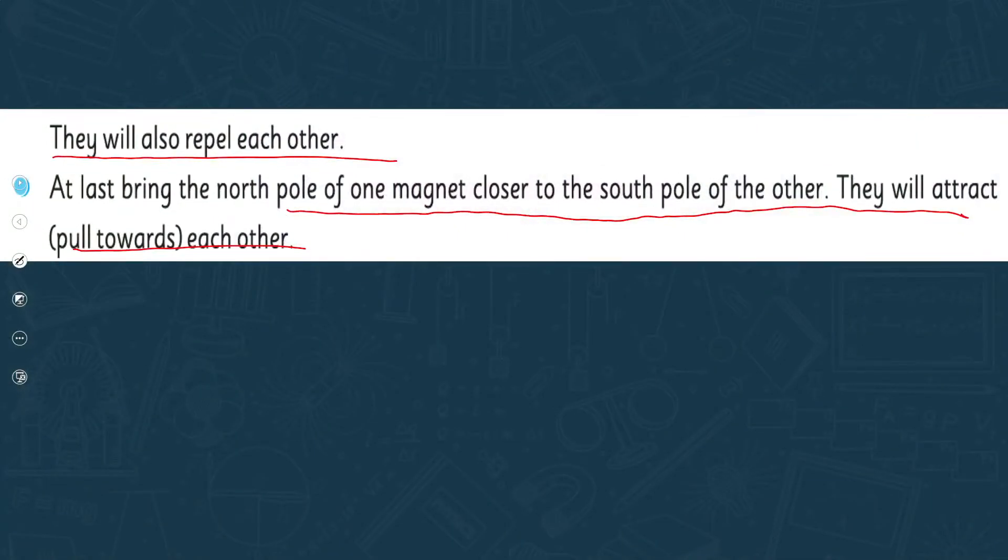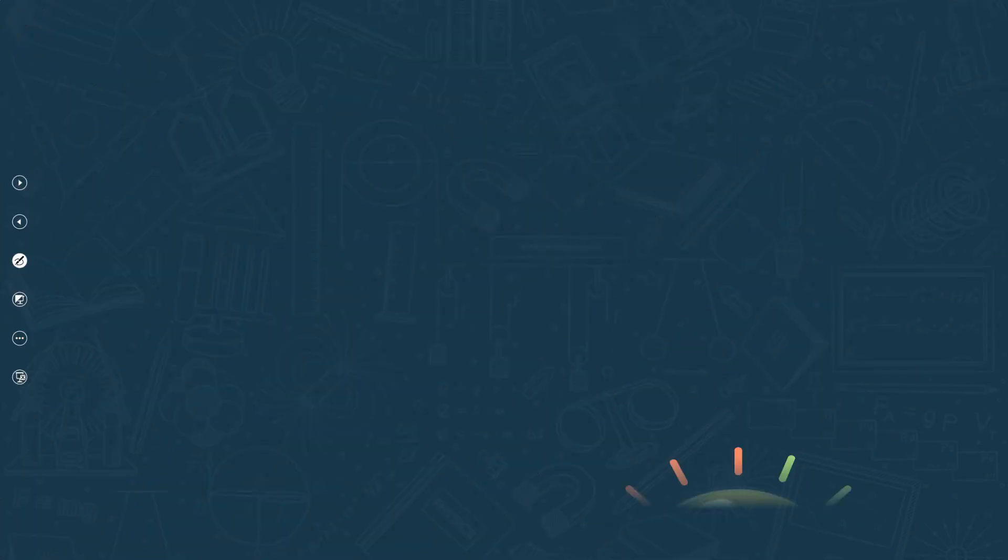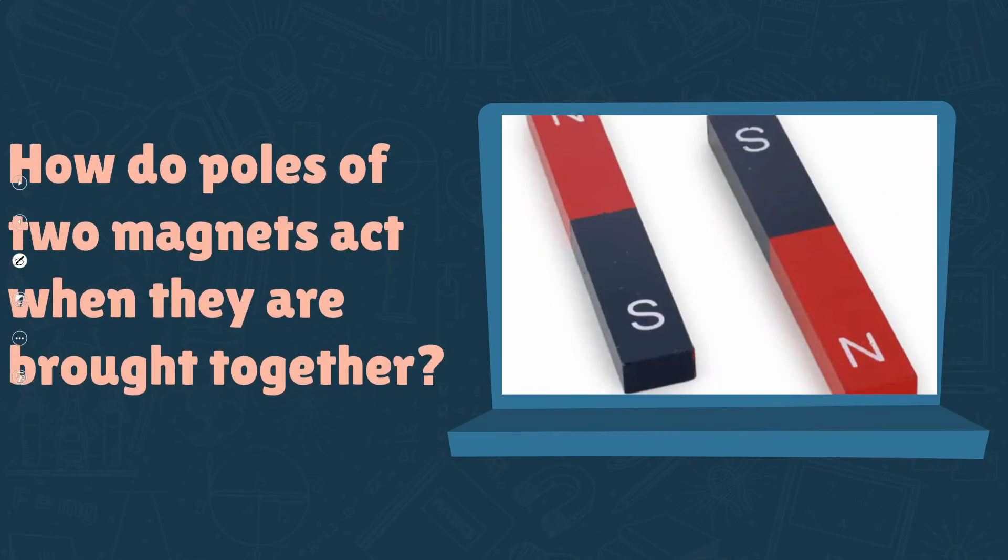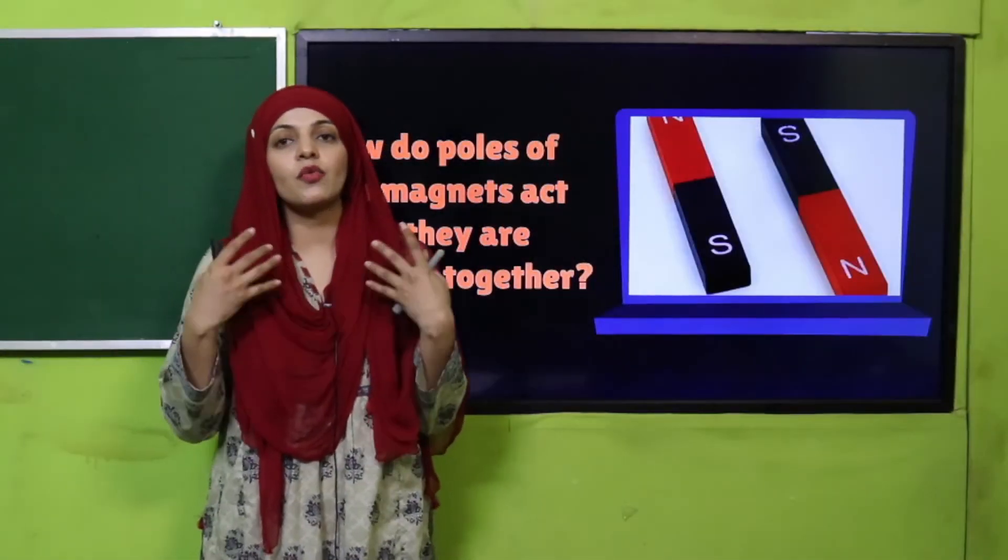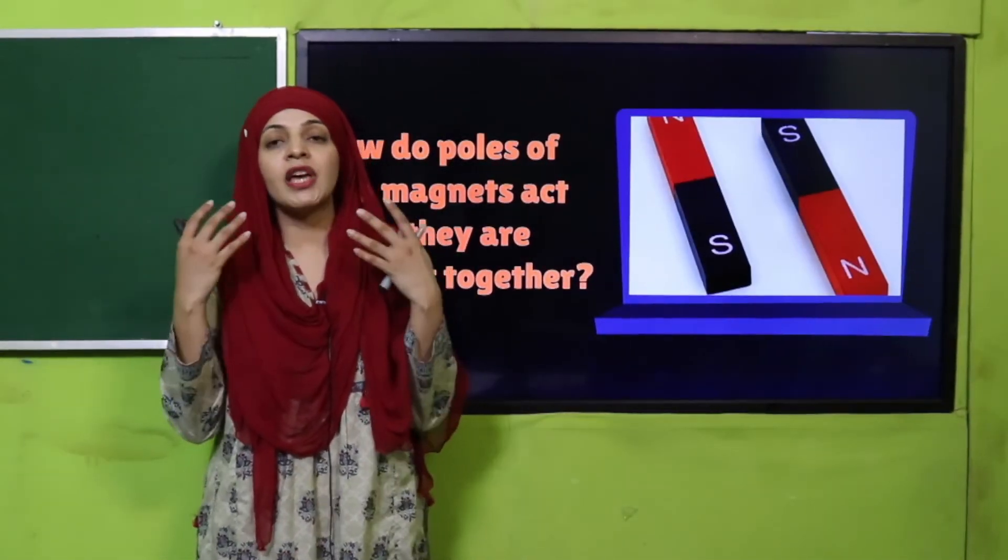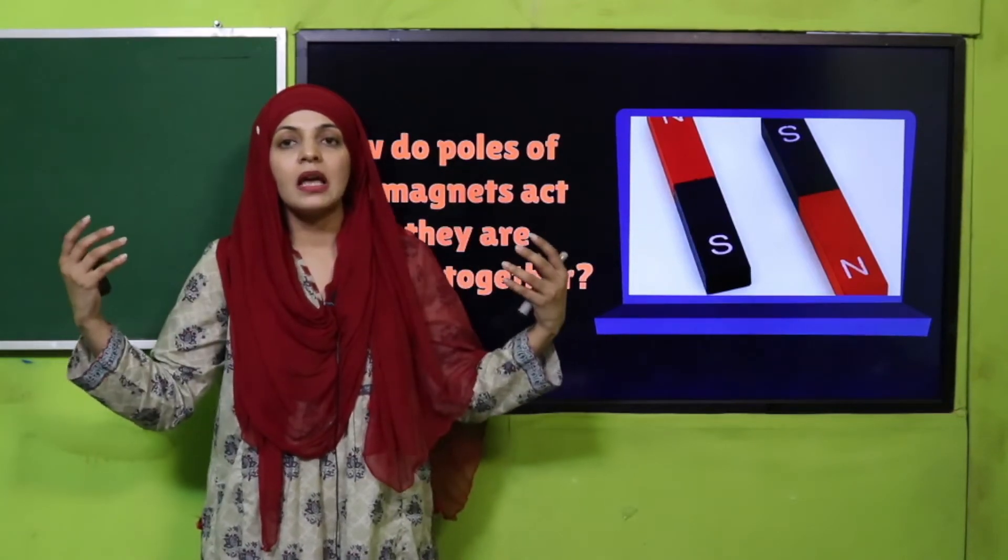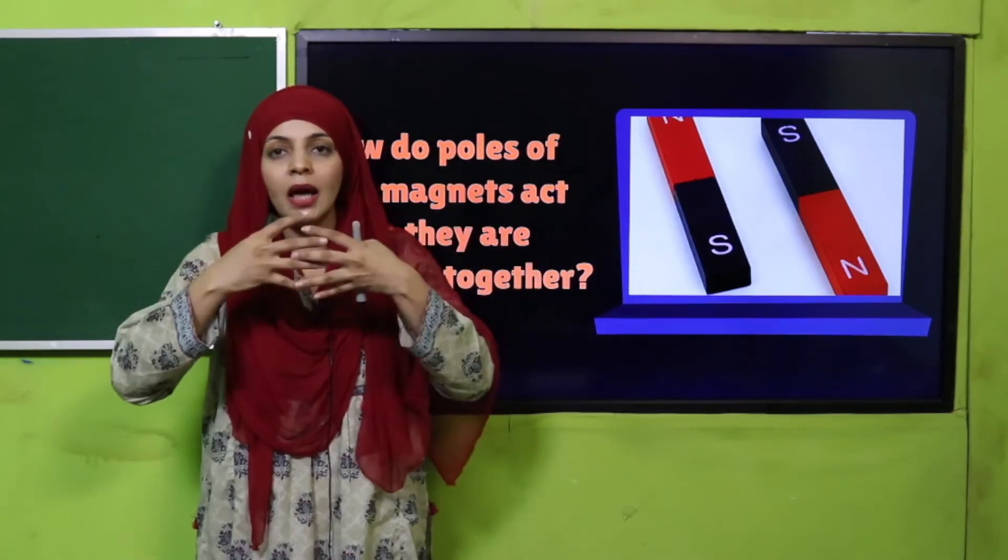Now let's move forward. The evaluation question: How do poles of two magnets act when they are brought together? When two poles of magnets are brought close, how do they behave? If they are similar they will repel. If they are opposite then they will attract.